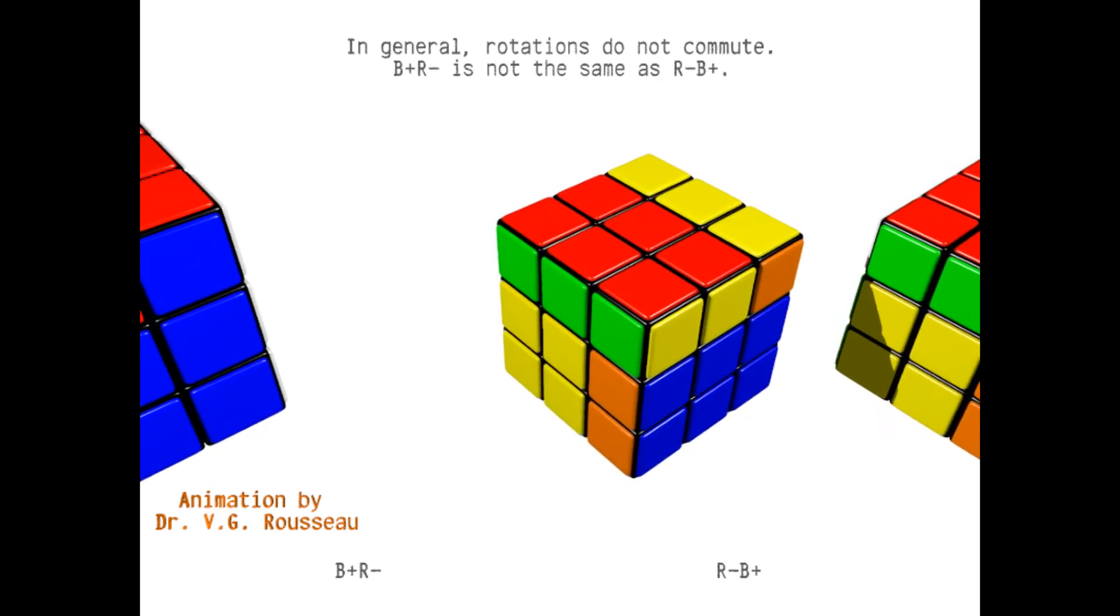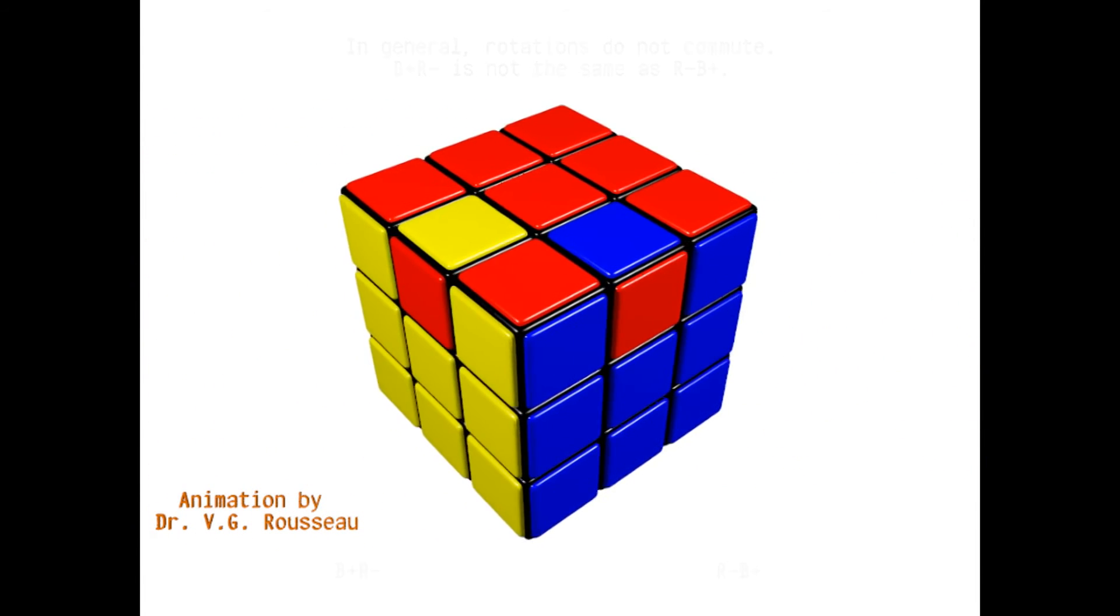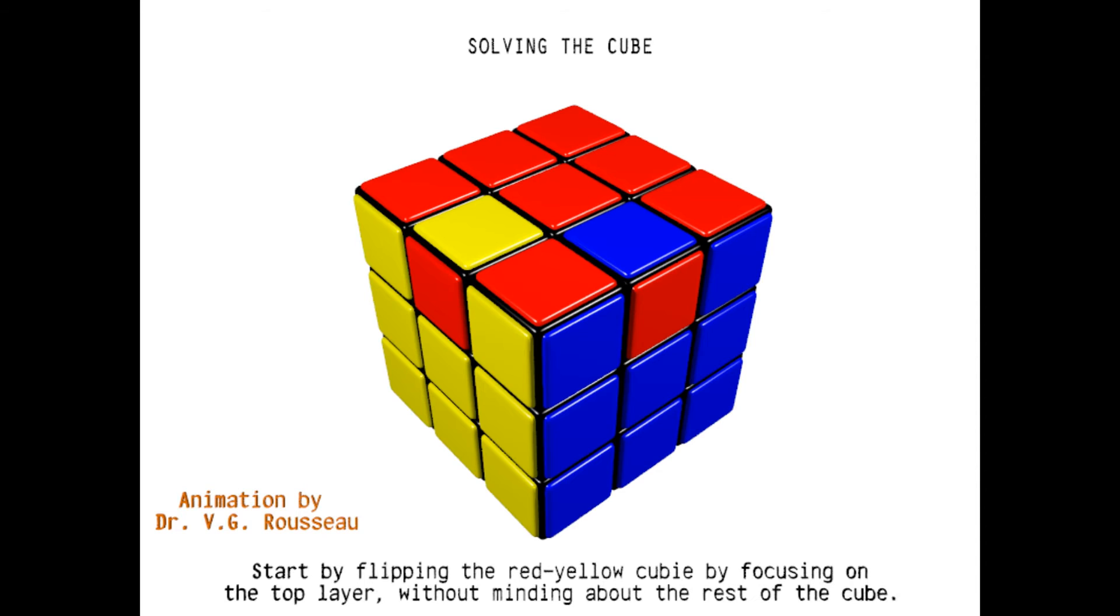To begin, it is easier to explain the reasoning by starting from a cube that is almost solved. In the present case, we must flip the red-yellow cubie and the red-blue cubie, and the challenge is to do it without messing up the rest of the cube. The idea is to flip the red-yellow cubie and preserve all the other red cubies, without minding about the rest of the cube.